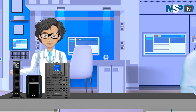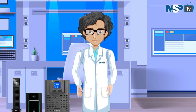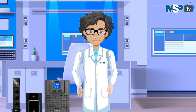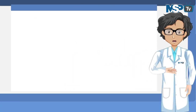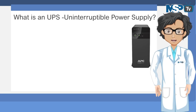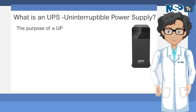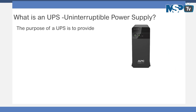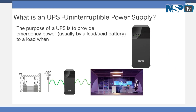Let's move to the presentation area. Let's start with the basics: what is a UPS? An Uninterruptible Power Supply — the purpose of a UPS is to provide emergency power, usually via a lead-acid battery, to a load when it senses that the input power source has failed.